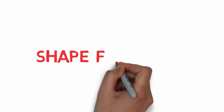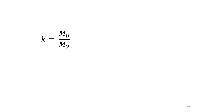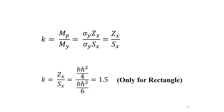The third section property is called the shape factor, denoted k. It is defined as the ratio of the plastic moment Mp to the yield moment My. If we substitute Mp and My with sigma_y times Zx and sigma_y times Sx respectively, the shape factor can also be defined as the ratio of the plastic section modulus to the elastic section modulus. For a rectangular cross-section, S equals base times height squared over 6 and Z equals base times height squared over 4. Therefore, the shape factor of a rectangle is 1.5.